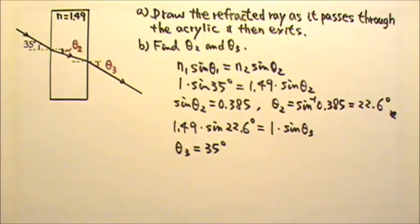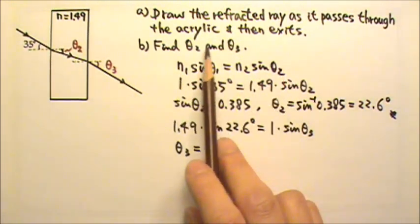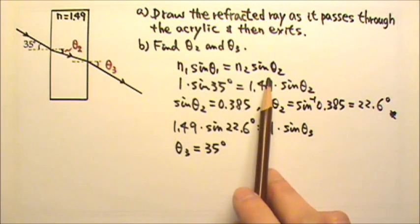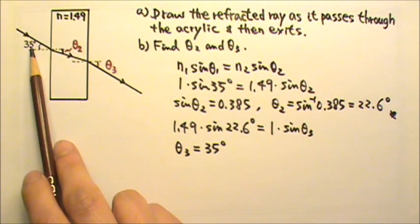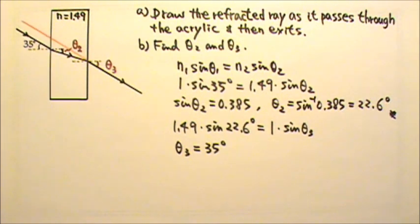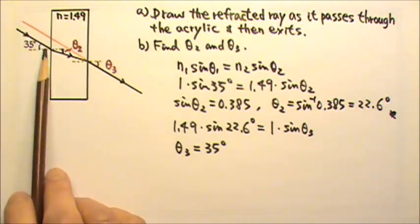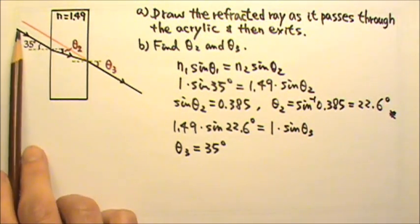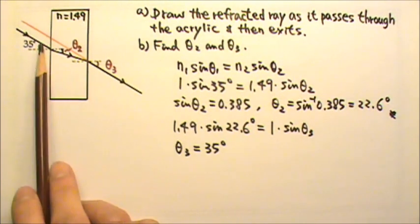Same as this. Because these two angles are equal, and Snell's law is symmetric for 1 and 2, of course we should expect theta 3 to equal 35 degrees. This means after passing through a rectangular block, the light continues in the same direction, but not along one straight line. The outgoing ray is shifted.